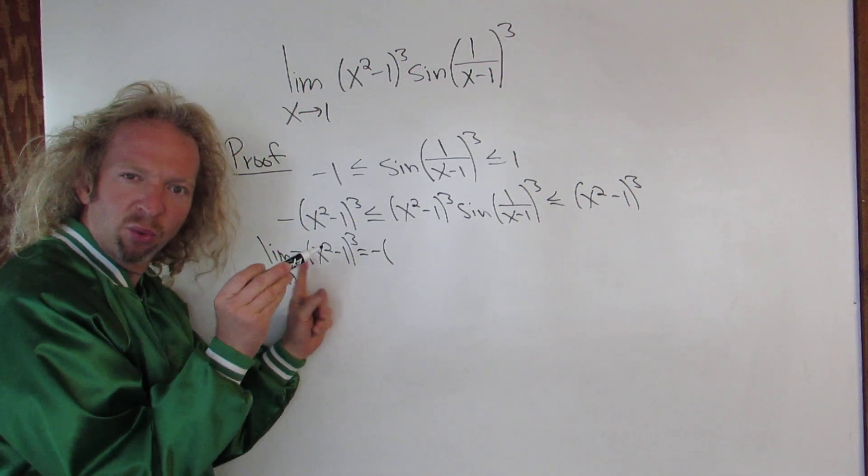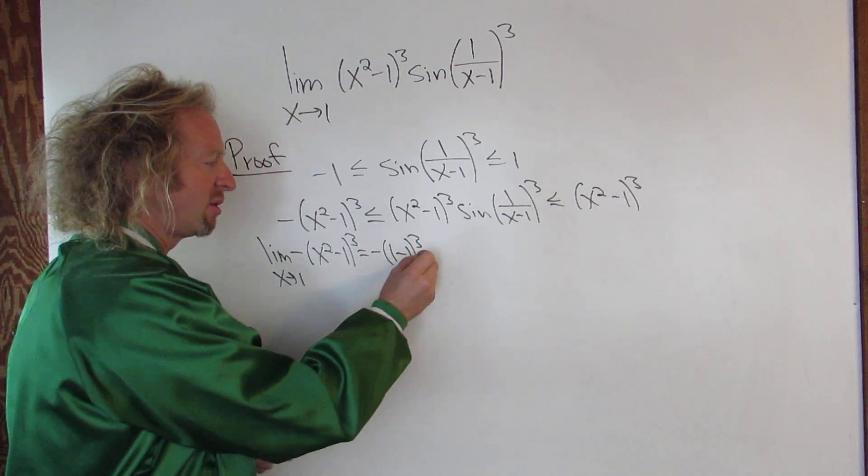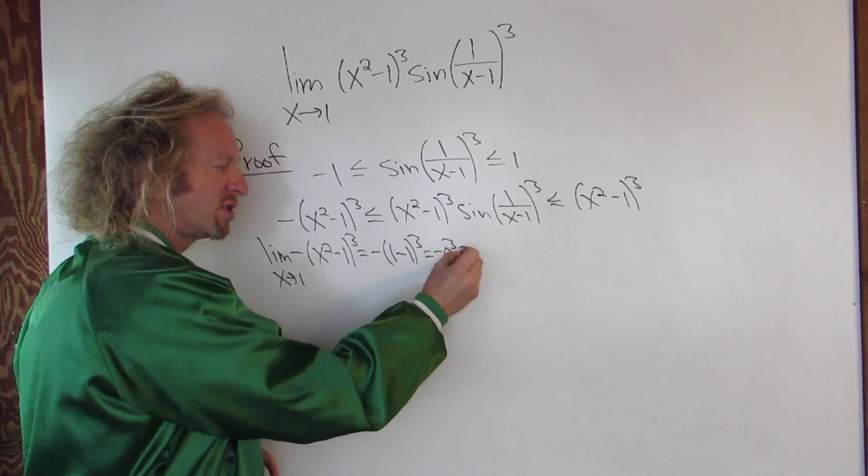So this is negative. 1 squared is 1, so 1 squared is, I'm going to skip a step, 1 squared is 1 minus 1. 1 minus 1 is 0, so you get negative 0 cubed, so you just get 0. So this limit is just 0.